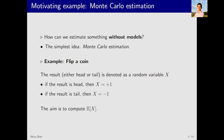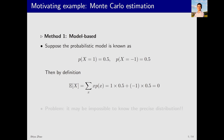Suppose I have a coin and I flip it — it lands on either head or tail. Let's denote this result as x. If the result is head, then x equals positive 1. If the result is tail, then x equals negative 1. The problem we're solving is to find the average or expectation of x. The first method is model-based, where the probability distribution of x is known. For example, if the probability of landing head up is 0.5 and tail up is also 0.5, the expectation can be easily calculated as 0.